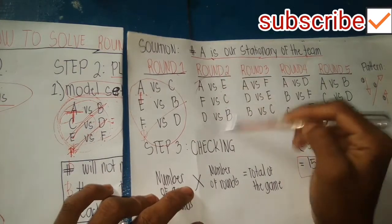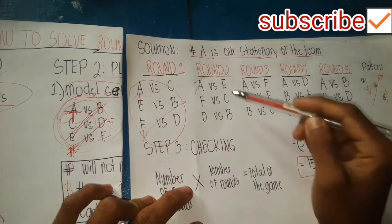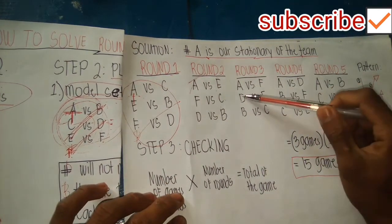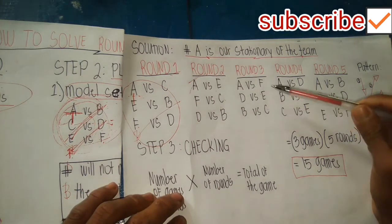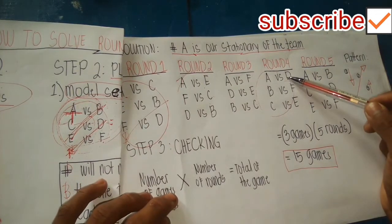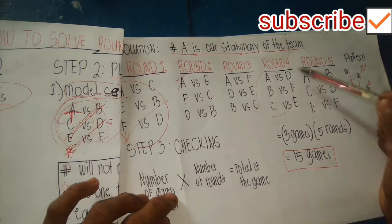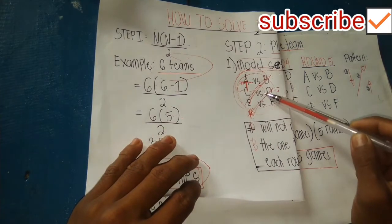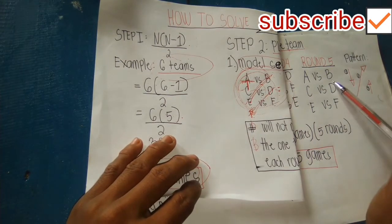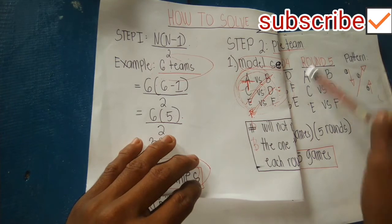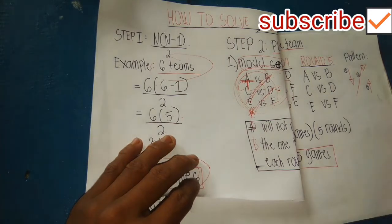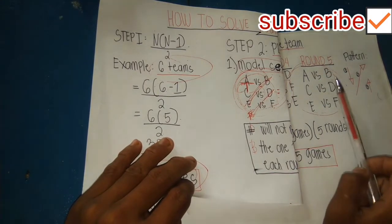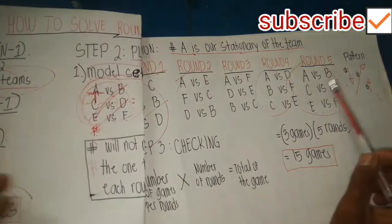Round 3: A versus F, D versus E, B versus C. Round 4: A versus D, B versus F, C versus E. Round 5: A versus B, C versus D, E versus F — which brings us back to our model set. We stop here because all teams have played each other.